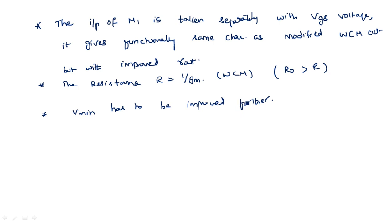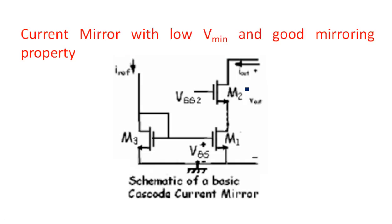Though this configuration satisfies a good R0, it will not give an improved version of Vmin. That is why we take another different configuration: current mirroring with low Vmin and good mirroring property.